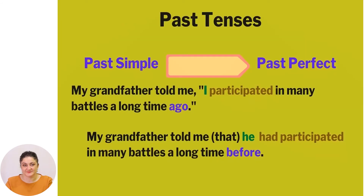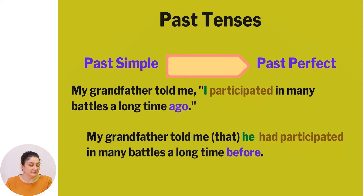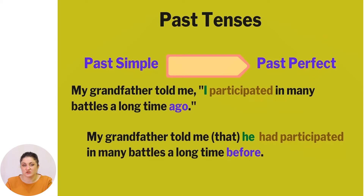The next tenses are past. The first one is past simple, and past simple changes into past perfect when we want to change a sentence into reported speech. Let us read the example: 'My grandfather told me, I participated in many battles a long time ago.' The reported sentence is: 'My grandfather told me he had participated in many battles a long time before.' You can notice that 'participated' transformed into 'had participated', the pronoun 'I' changed into 'he', and 'ago' changes into 'before'.